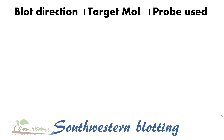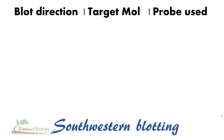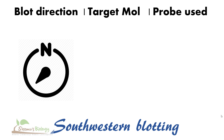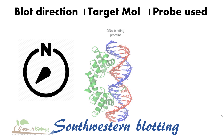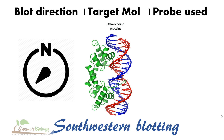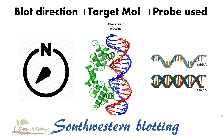Then comes the fourth one: southwestern blotting. Southwestern blotting is used to find out DNA binding proteins, and the probe used to find those DNA binding proteins is single stranded DNA — again radioactive, or it can be labeled with any fluorescent dye.